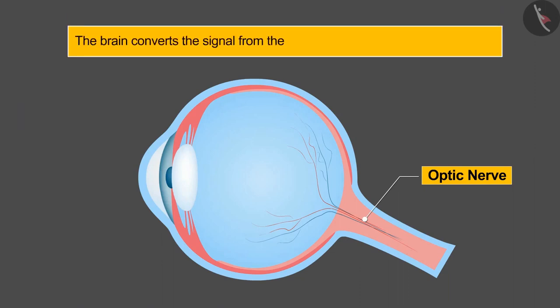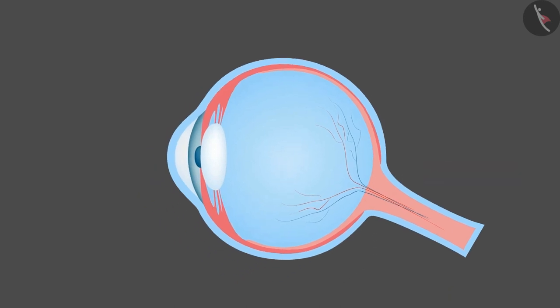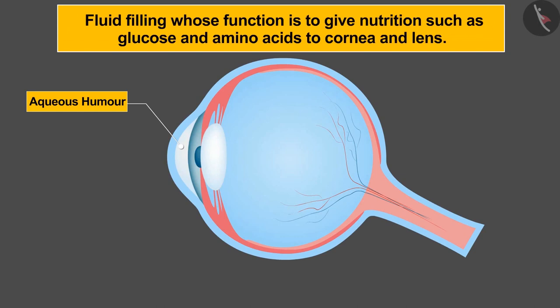Apart from these organs, there are two types of humor filling in our eyes. First one is aqueous humor, which is a fluid filling whose function is to give nutrition such as glucose and amino acids to cornea and lens.